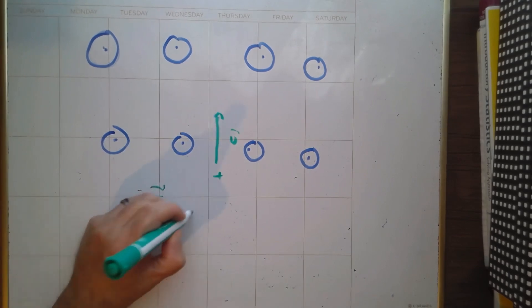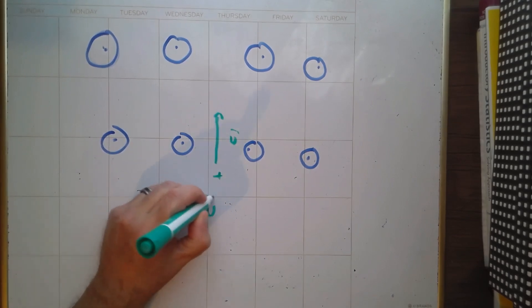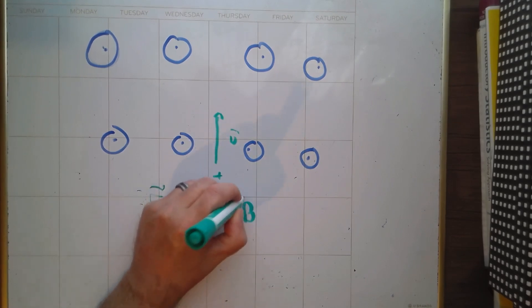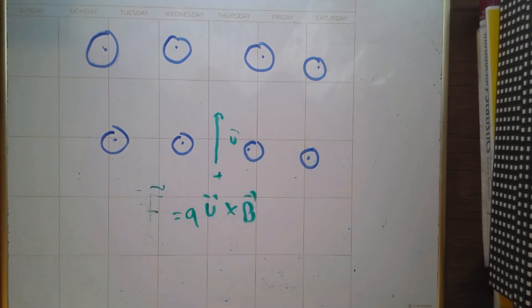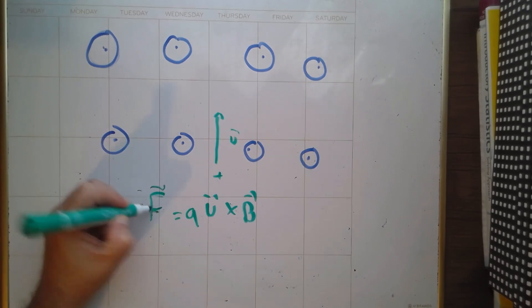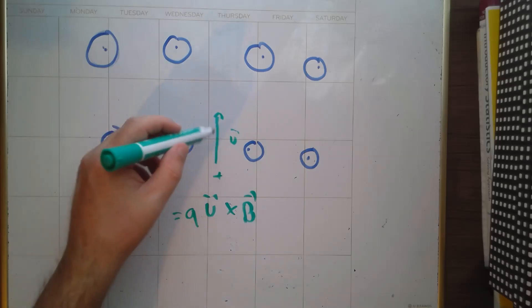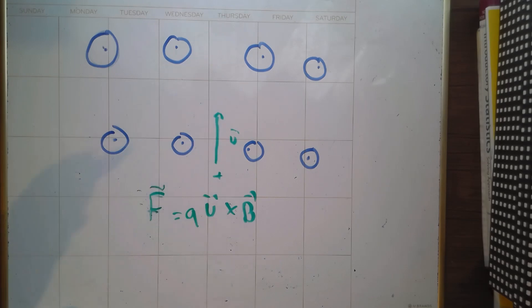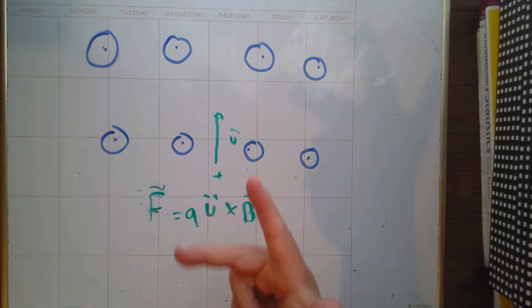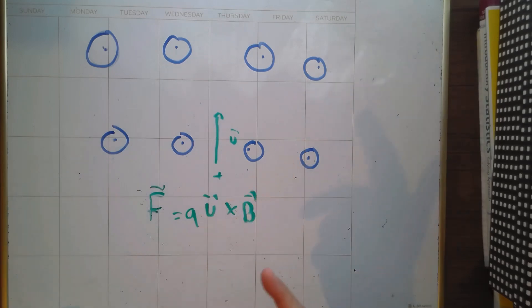Remember: F equals q times v cross B, and the direction is given by the right-hand rule. This is a cross product; in magnitude it's just q times speed times the magnitude of B — that part's easy. It's the direction we're going to figure out using the right-hand rule. You can do this with three fingers or the curling method; I'll do it both ways.